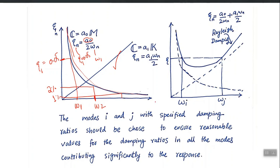This mass proportional approach is simple but approximate, because you cannot control the damping assigned to other modes. If you are sure that only the first mode will dominate the dynamic response, you can use this option and calculate a₀ using that expression — for example, setting 5% for the first mode. Similarly, for stiffness proportional damping, the relationship between ω and ξ = a₁ω/2 is linear and increasing.